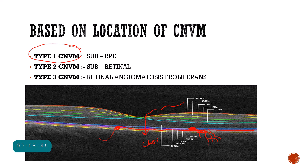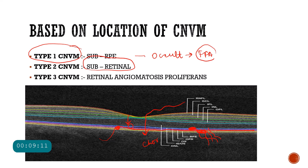Another name for the sub-RPE CNVM is the occult CNVM — this is a classification given by FFA. Next, we have the Type 2 CNVM, in which the choroidal neovascular membrane crosses the RPE and occupies a position in between the neurosensory retina and the RPE. That CNVM is called a subretinal CNVM, and on fundus fluorescein angiography such a CNVM is called the classic CNVM.